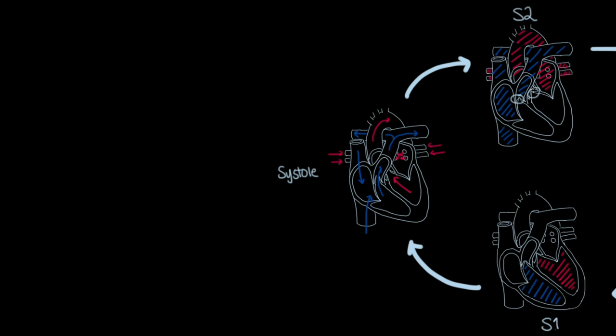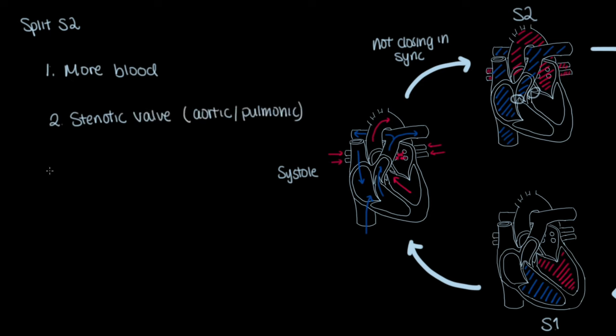There are certain scenarios that can cause the aortic and pulmonic valves to not close in sync, which leads to what people call a split S2. When you hear a split S2, what you should be thinking about is one of the ventricles is not completing its systolic cycle in time. This can be due to a couple things: more blood, stenotic valve, weak ventricles, or an unsynchronized depolarization.